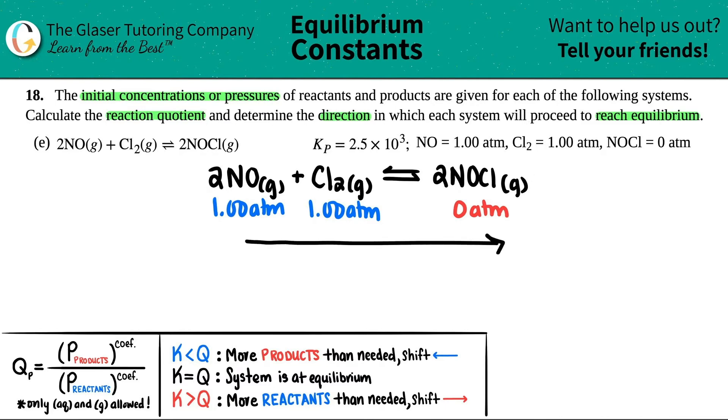So what way are we going to go? Are we going to go this way? Or are we going to go this way? We're going to go this way because we need to produce the thing that we have nothing of. So we're going to shift, or if you want to say proceed, doesn't matter. Shift to the right. You're going to do the forward reaction from the reactants to the products.